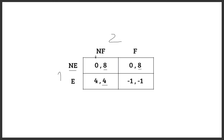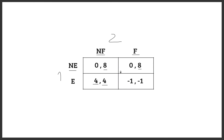Now let's focus on player two's perspective. If player two decides not to fight, player one compares payoffs: 4 is greater than 0, so player one will choose to enter. If player two decides to fight, firm one would choose not to enter because the payoff from not entering is greater than from entering. So we now have the Nash equilibria — two Nash equilibria: this one and this one, where both players' strategies are mutually underlined.